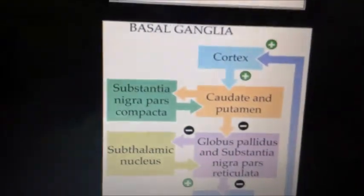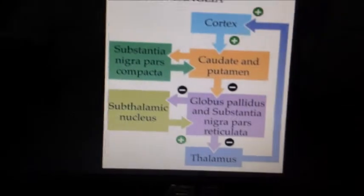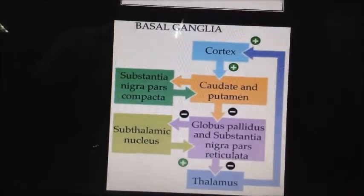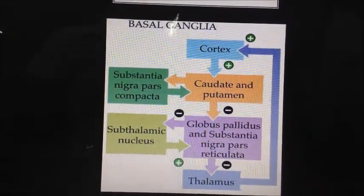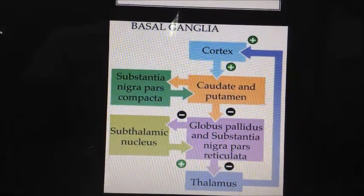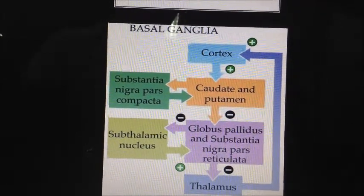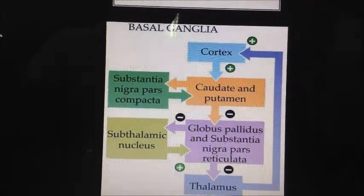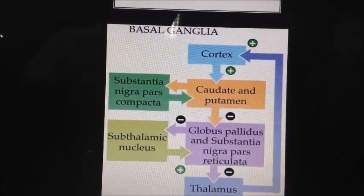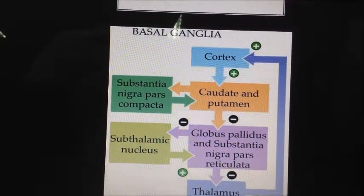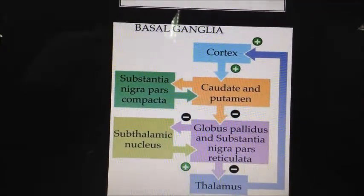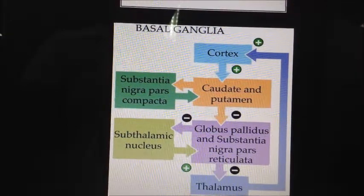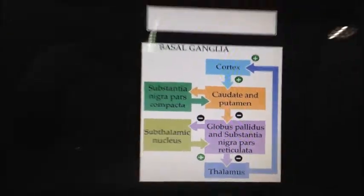The basal ganglia includes the cortex, the substantia nigra pars compacta, the caudate and the putamen, the subthalamic nucleus, globus pallidus, substantia nigra pars reticulata, and the thalamus.